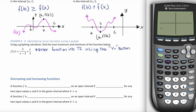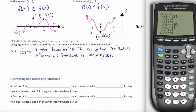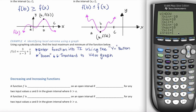Zoom Standard is always a jumping-off point. The horizontal axis goes from negative 10 to positive 10, scaled by 1, and the vertical axis is similar. If the graph isn't showing well, go into the Window button and adjust the minimum and maximum X and Y values. Play around with those settings if Zoom Standard isn't working well for you.